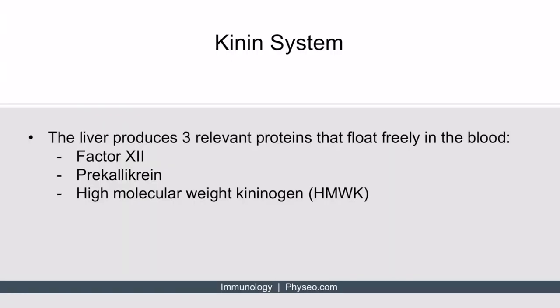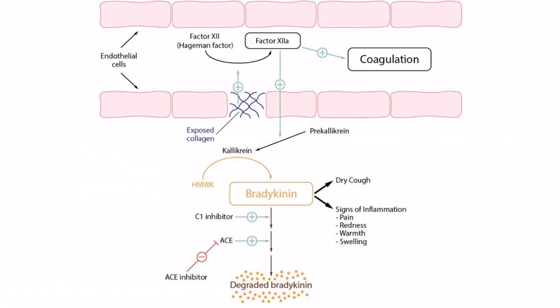When it comes to the kinin system, it's important to have this background. The liver will produce three relevant proteins, and these float freely in the blood. These include factor XII, prekallikrein, and high molecular weight kininogen, or HMWK. This image depicts the kinin system. You can see endothelial cells here, indicating that this is a blood vessel, and these three proteins just float around in the blood.